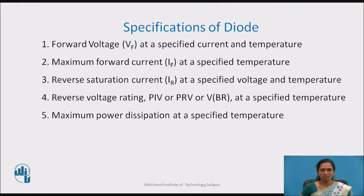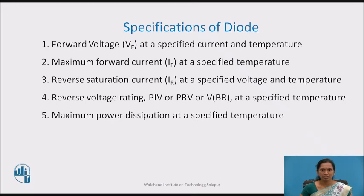Some specifications of the diode are listed here. In the datasheet you can find: forward voltage at a specified current and temperature, maximum forward current at a specified temperature, and — very importantly for diode selection — the reverse voltage rating, also known as peak inverse voltage or peak repetitive reverse voltage. Maximum power dissipation at a specified temperature is also an important parameter. Based on all these parameters you can select a specific diode for a given application.